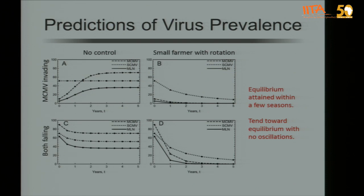The initial prediction of virus prevalence — using a small-farmer scenario — shows that SCMV remains endemic at a stable level, while MCMV invades and increases, then reaches its own equilibrium level. MLN does the same thing, and this happens fairly quickly — within a few years you have a stable level of virus in the environment. After disease management, drops in prevalence of each virus occur, but those too quickly level off at a new equilibrium. Notably, crop rotation dropped the prevalence of viruses very strongly in this model.